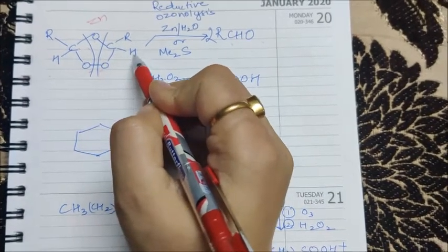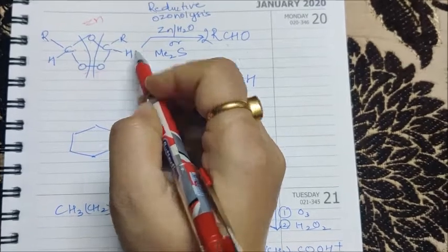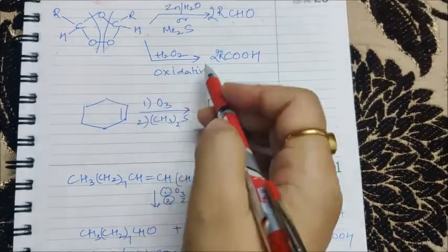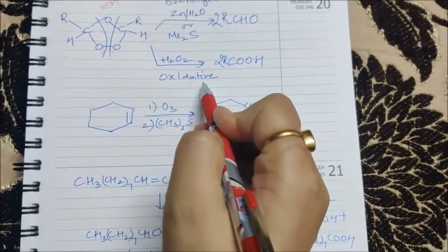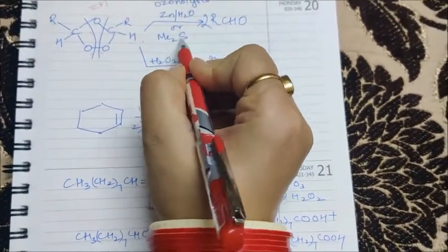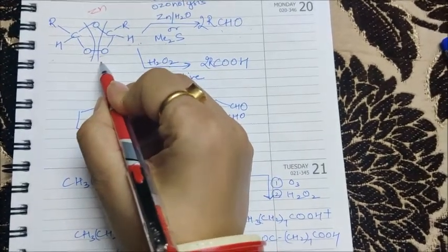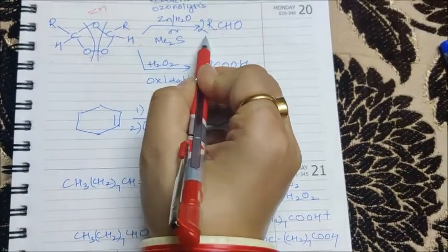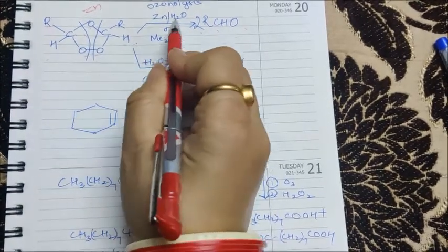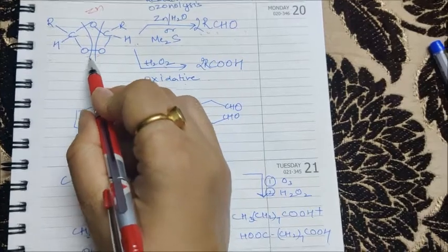Now the second kind of ozonolysis is the oxidative one, in which instead of zinc water or Me2S, we are taking H2O2, an oxidizing agent, to further the oxidation of the aldehydes. The product which we will be getting from reductive ozonolysis will be oxidized. Hence, instead of getting an aldehyde, we are getting two acids.